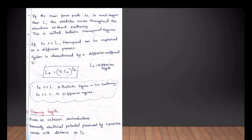If the mean free path is very large, instead of the electrons being blocked, the mean free path is large. If the mean free path could not block the diffusion process, when our electrons will move from higher to lower concentration, this is called the diffusion process.